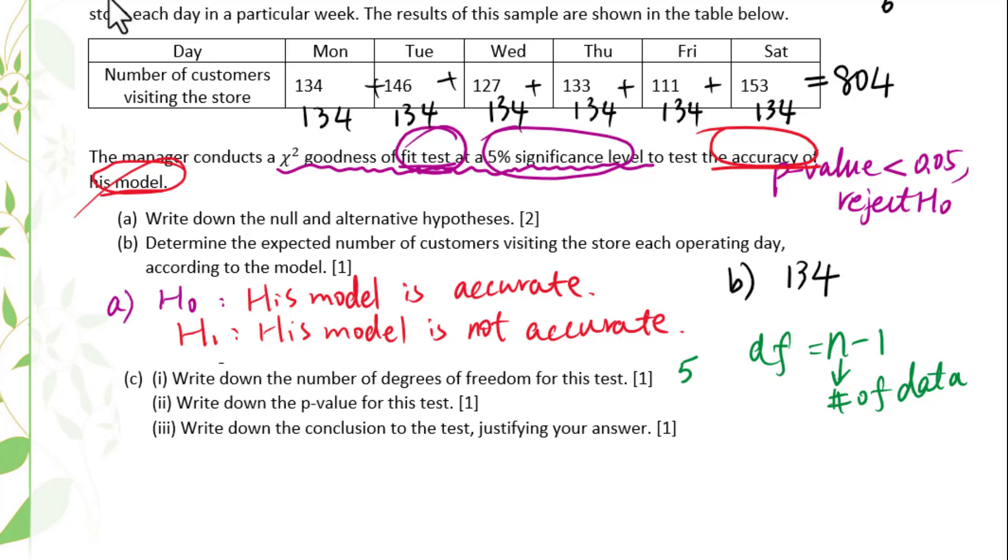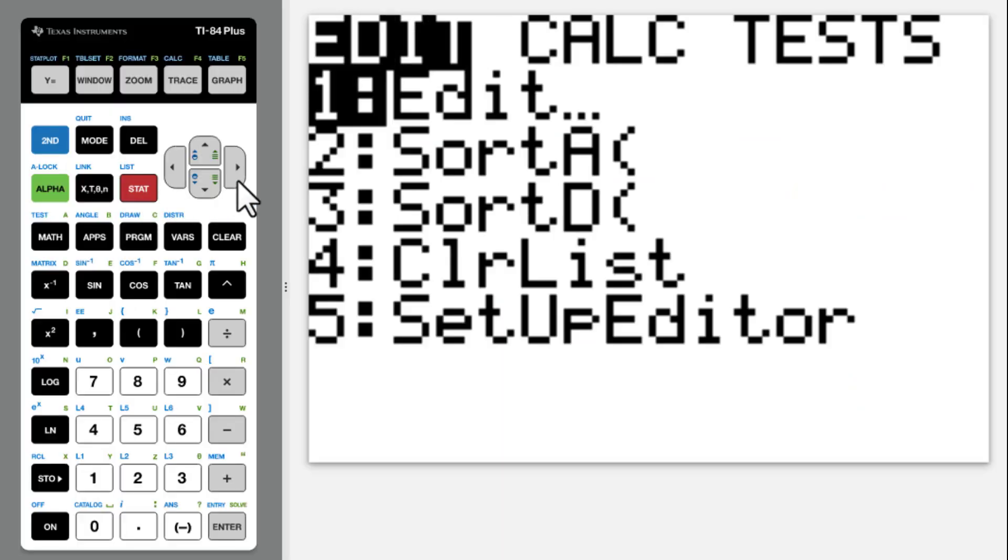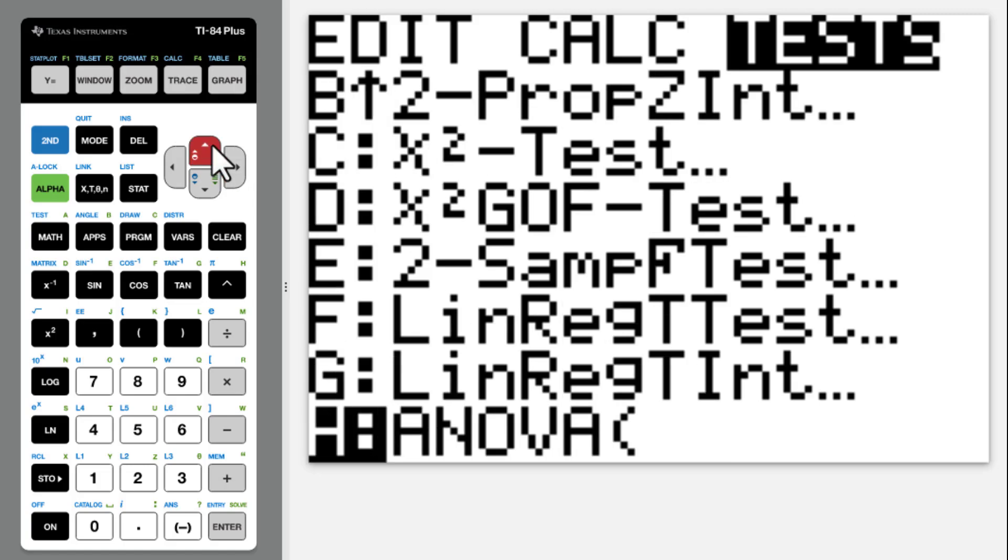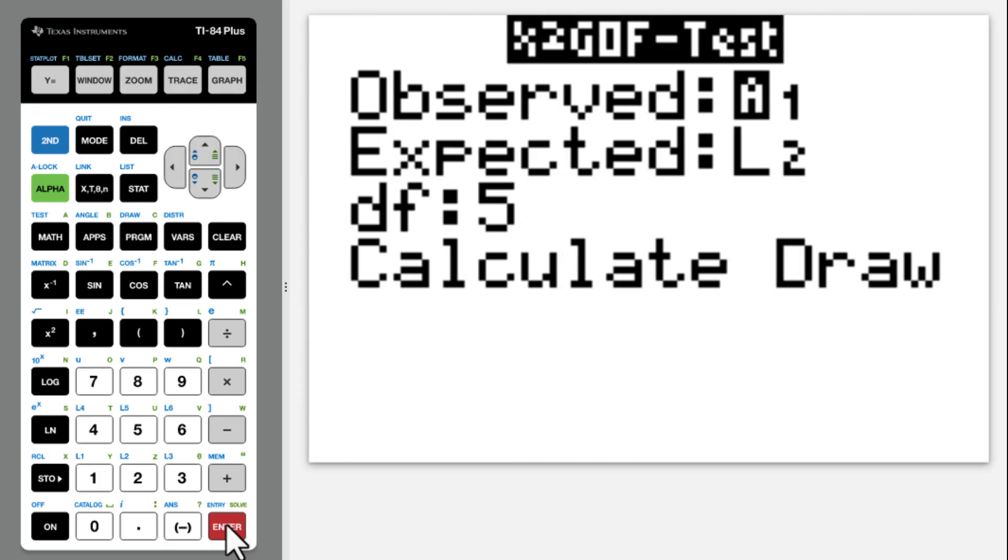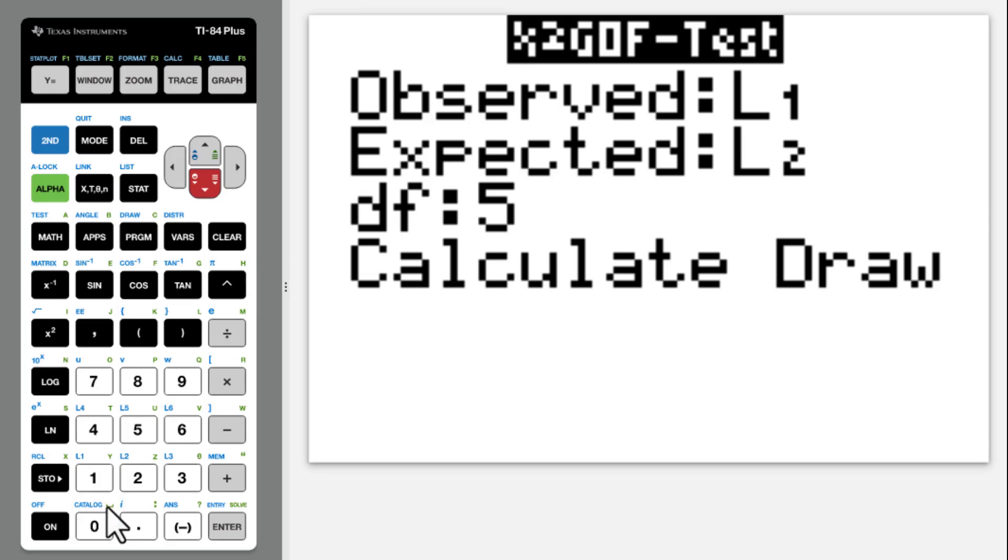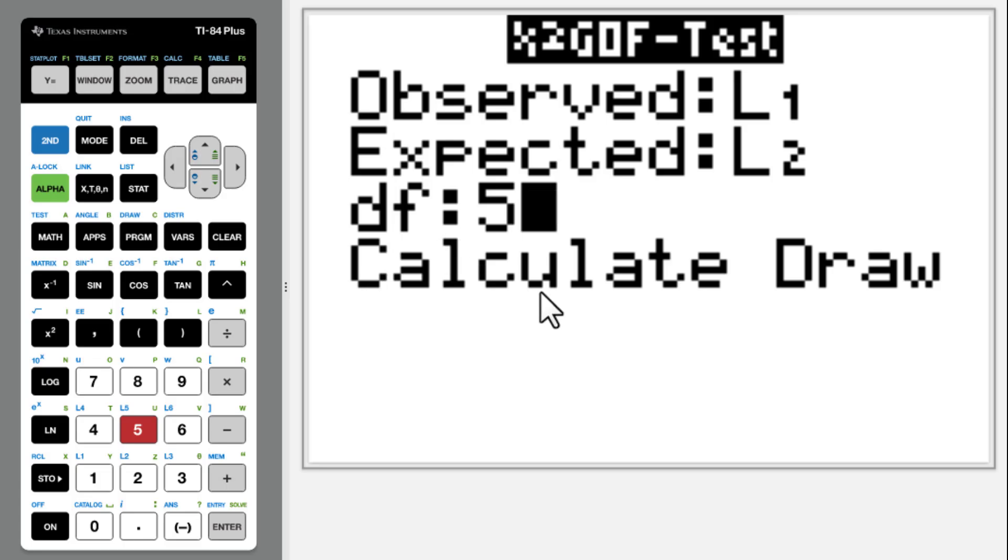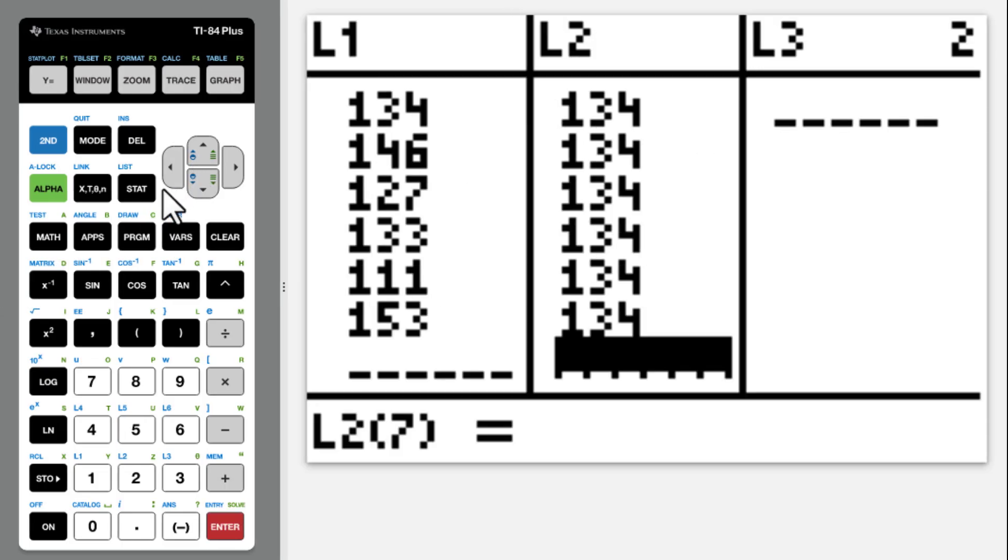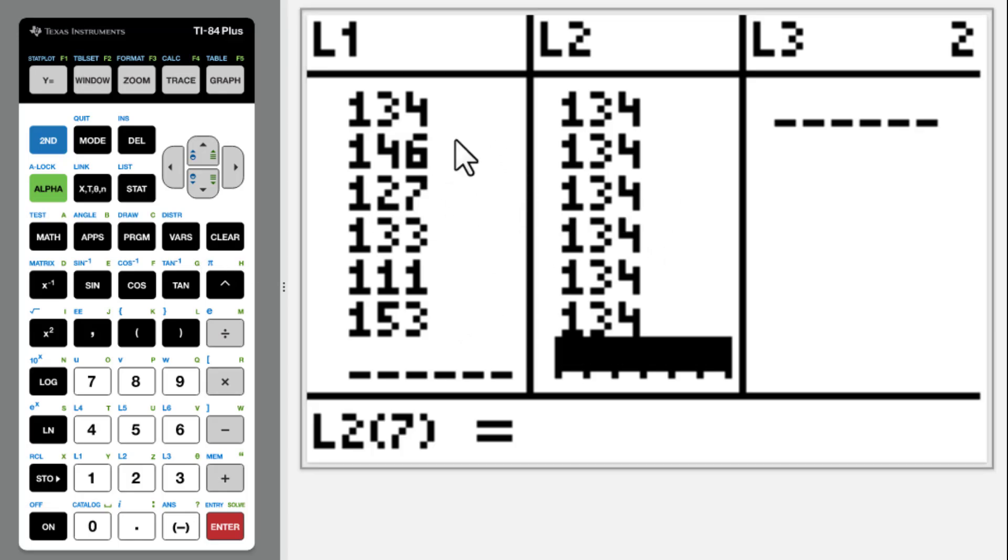Write down the p-value for this test. Let's go to chi-square GOF test so that we get some clue where we will put the data. We need to put original data in L1, expected in L2. L1 is original data, L2 is expected data.